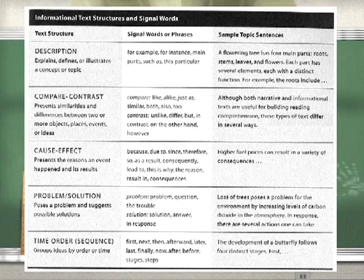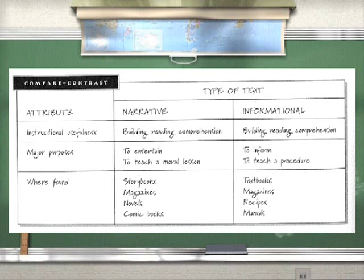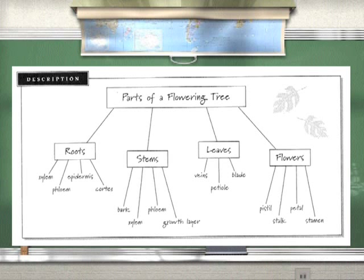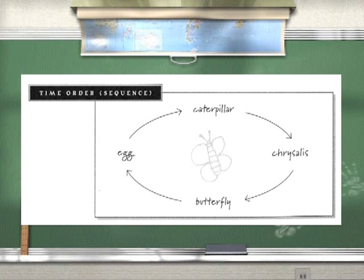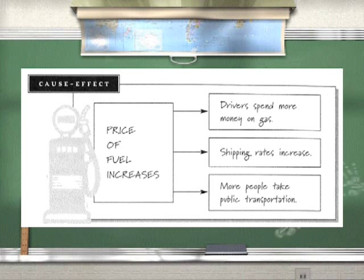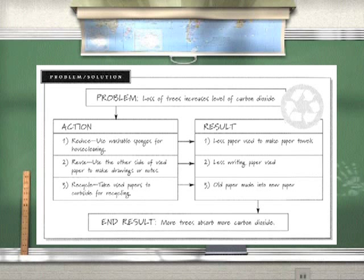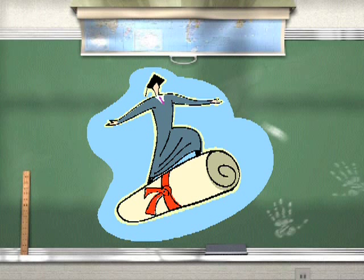Students can also use graphic organizers to further benefit their comprehension. These graphic organizers, which are based on the types of text structures, can help students to record information, see how concepts fit within the text structure, focus on the most important ideas, examine relationships among textual concepts, recall key information, and write well-organized summaries. Isn't that just every teacher's dream?